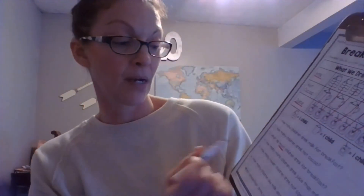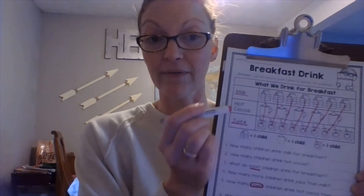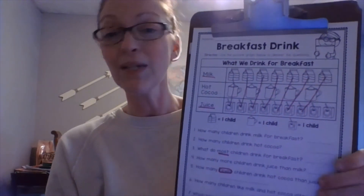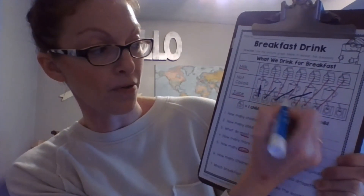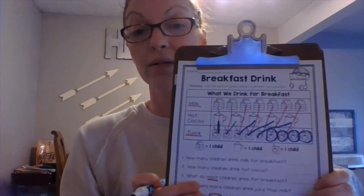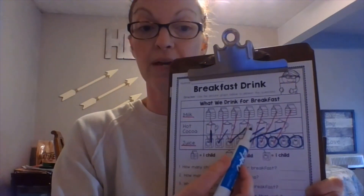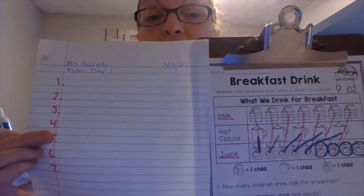Number five: how many fewer children drink hot cocoa than juice? Instead of comparing milk and juice, we're going to do hot cocoa and juice — we do the same thing. Whether it's fewer or more than, we draw the lines. They both have one, two, three, four, and five. But hot cocoa doesn't have these extras. So how many fewer? Write your answer on number five.